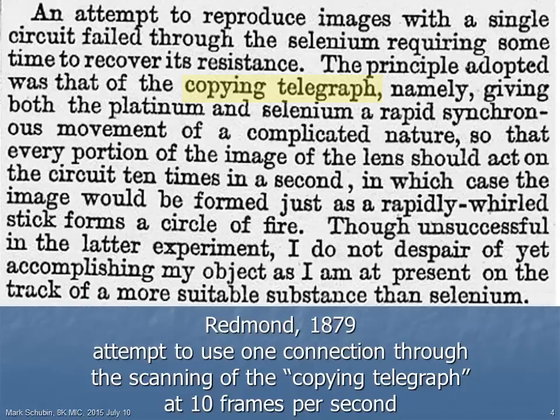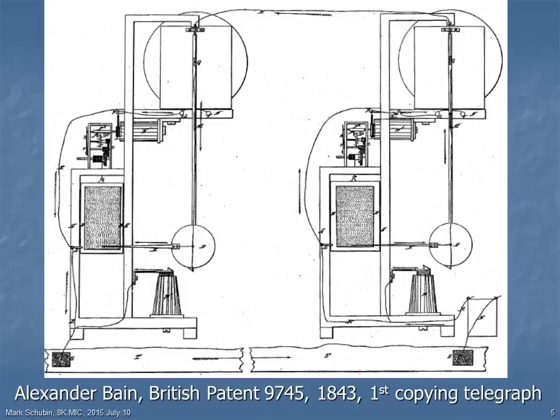Redmond recognized that those pixel-to-pixel connections were impractical, so he intended to use the image scanning of what was then called the copying telegraph. This diagram is for the first patent for a copying telegraph, issued to Alexander Bain in Britain in 1843. It's essentially a fax machine, but without any optical sensor. It introduced the concepts of scanning lines, pixels, and both line and frame synchronization.